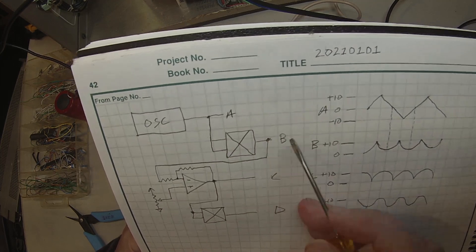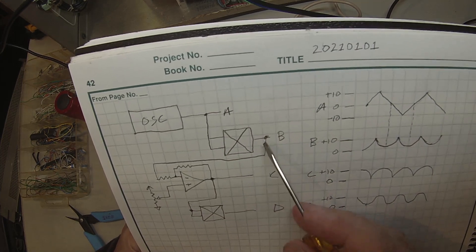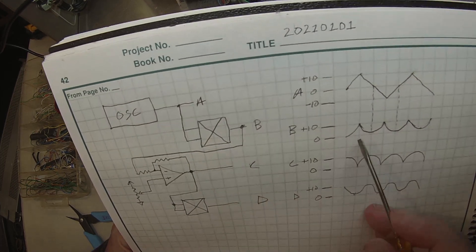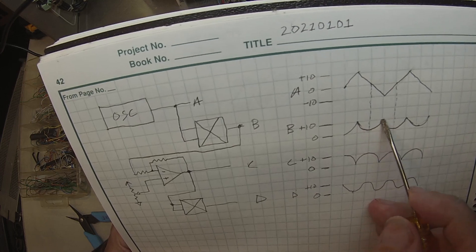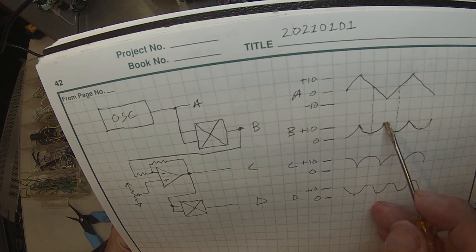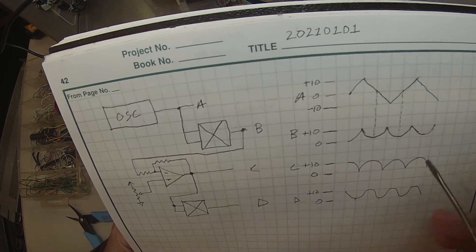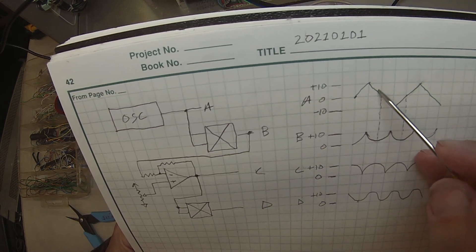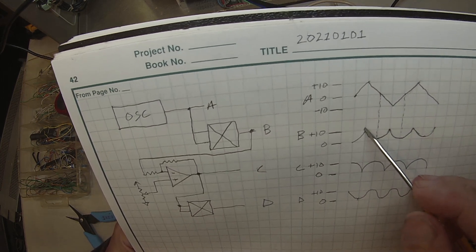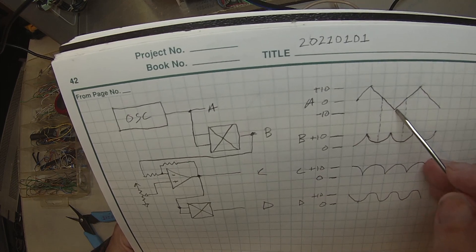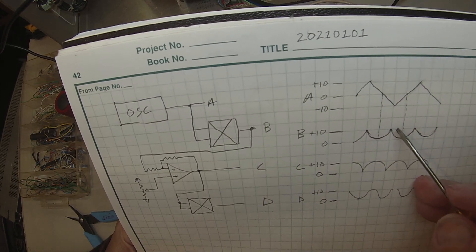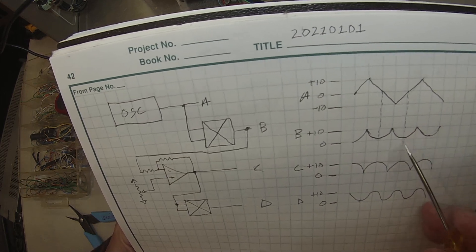But by feeding the same thing to both inputs of the multiplier, you get it to square that. So this goes up by the square of the input. And if it's a positive times a positive you get a positive. If it's a negative times a negative you still get a positive, just like in mathematics.